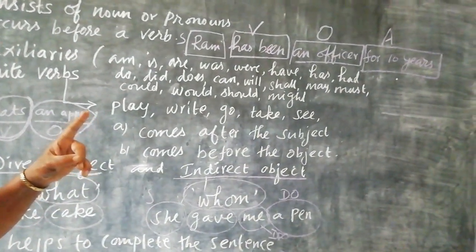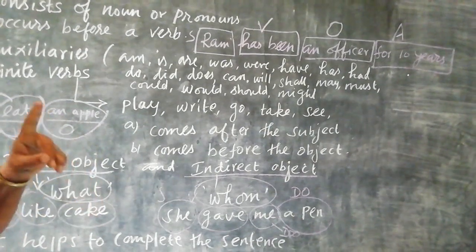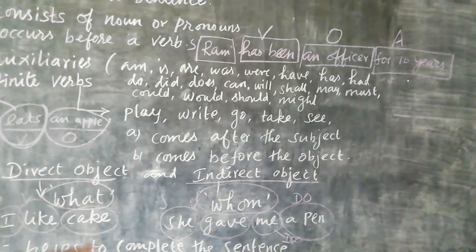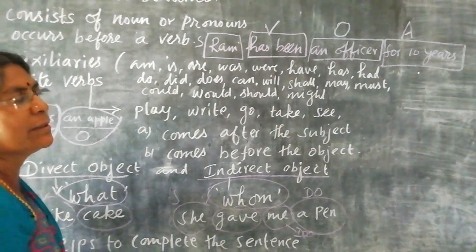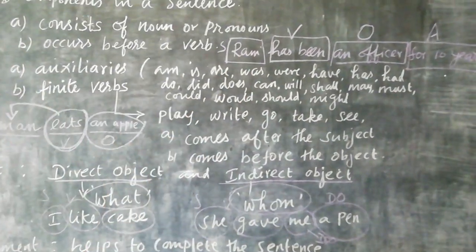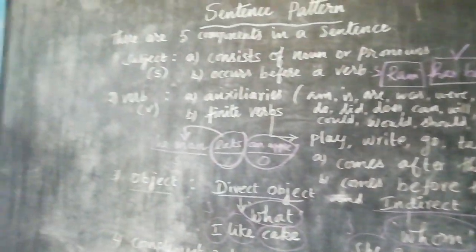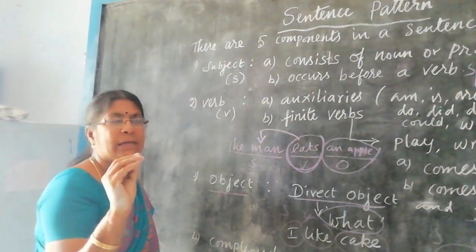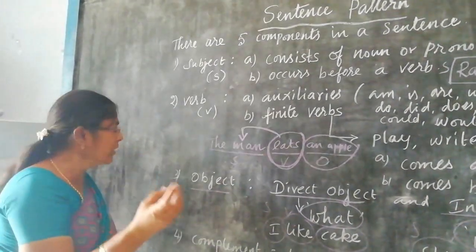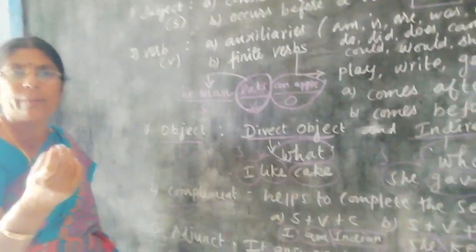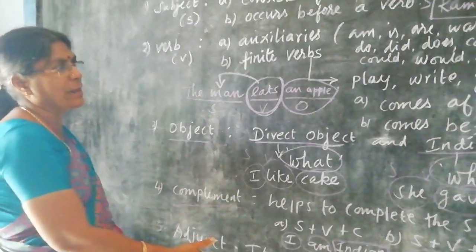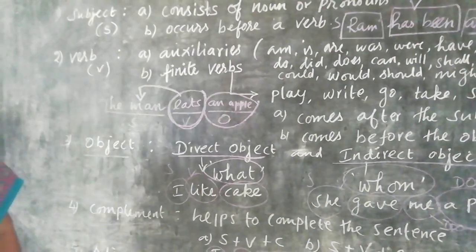To summarize, there are five components in a sentence: subject, verb, object, complement, and adjunct. Let us see a few examples in the next class. Thank you.